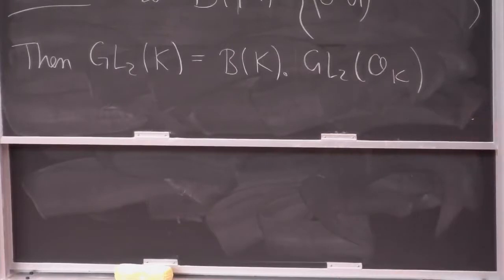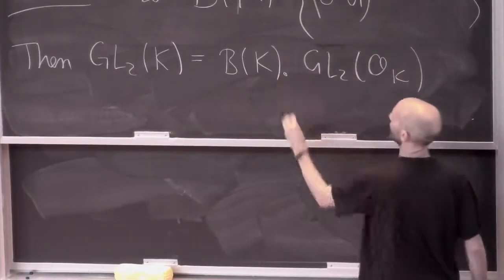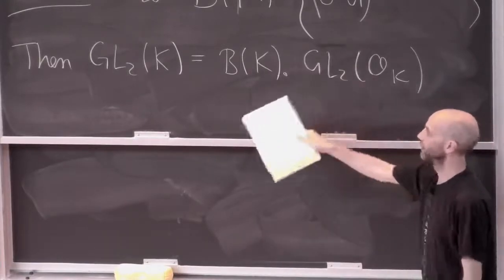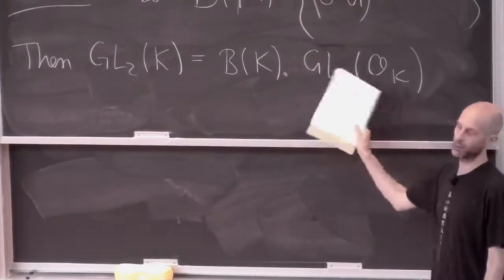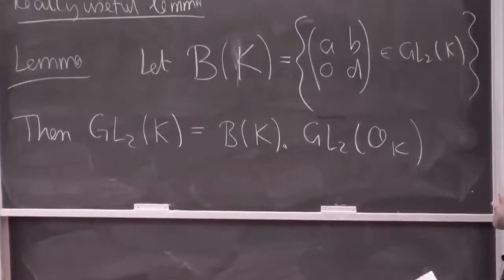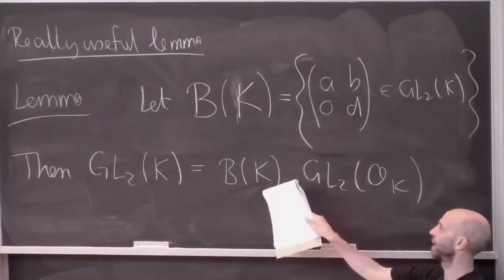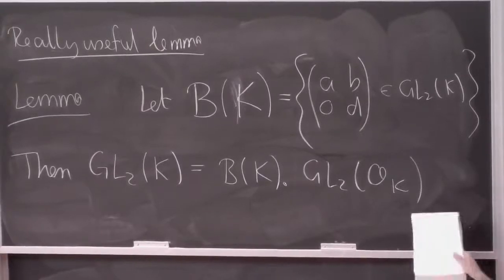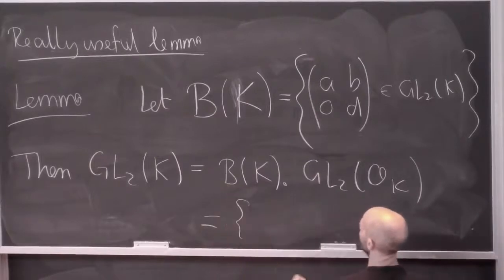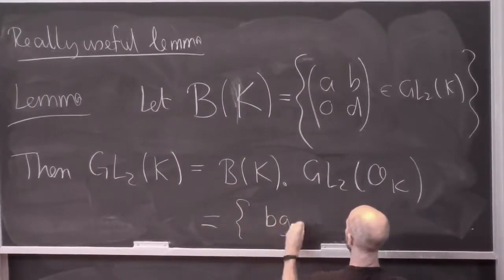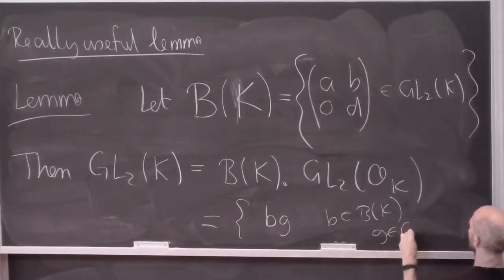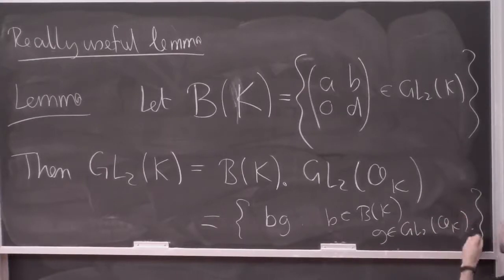Let B(K) be the upper triangular matrices — very easy to check that's a subgroup. Then it turns out that GL₂(K) equals B(K) times GL₂(O_K). In group theory you've got to be careful about what I mean by this product, because B(K) is a random subgroup, not remotely normal, and GL₂(O_K) is a random subgroup of GL₂(K), not remotely normal. Do I just mean the group generated by these two subgroups? I'm claiming GL₂(K) really equals the set of B times G for B in B(K) and G in GL₂(O_K).